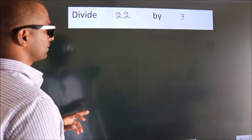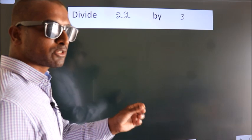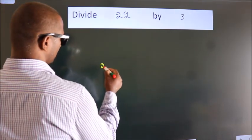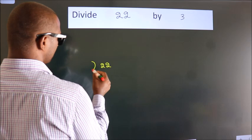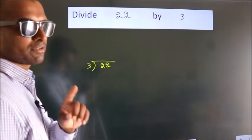Divide 22 by 3. To do this division, we should frame it in this way: 22 here, 3 here. This is your step 1.